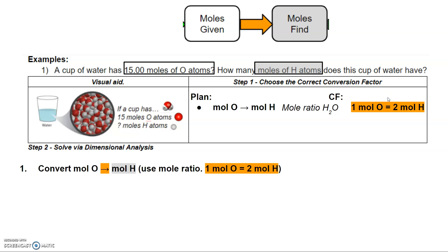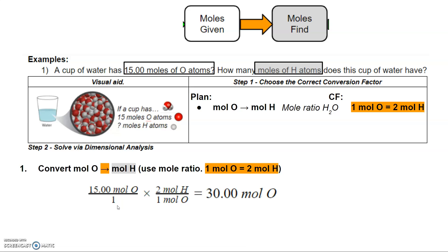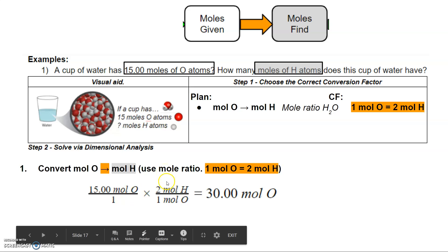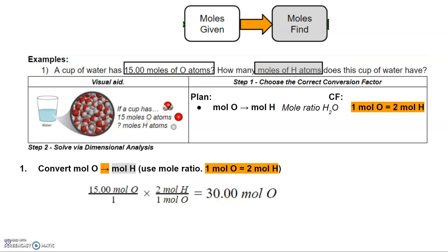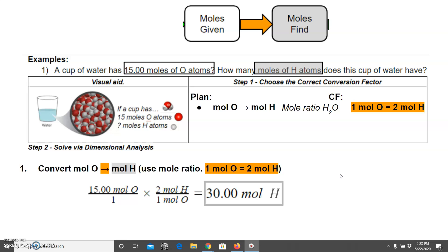Now let's do our conversion using dimensional analysis. We take our given and write it over one: 15 moles of oxygen over one. Then we use the mole ratio as our conversion factor fraction. Since I'm given moles of oxygen and want to cancel it out, moles of oxygen goes in the denominator — one mole of oxygen on the bottom — so the moles of oxygen cancel out, and two moles of hydrogen goes on top. The answer to this problem is 30 moles of hydrogen.